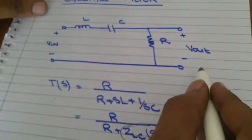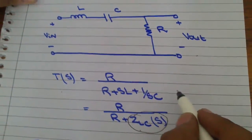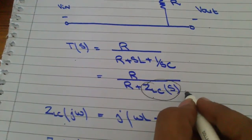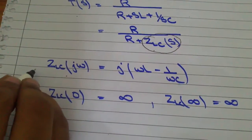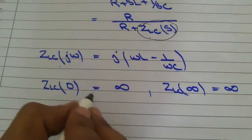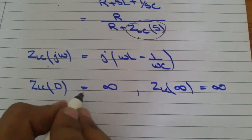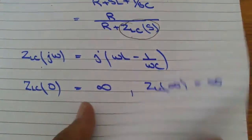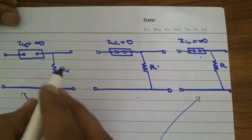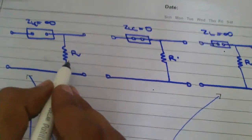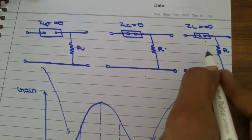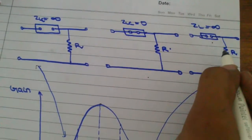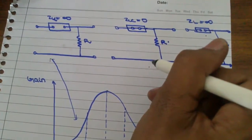We have the circuit of the RLC bandpass filter, and the transfer function of the circuit. Impedance plays the key role in finding the response. When the frequency is below the critical frequencies, the impedance is regarded as maximum, and when the frequency is higher than the critical frequencies, the impedance is again maximum. When the frequency is below the critical frequency, it acts as an open circuit; when higher, it also acts as an open circuit; but it acts as a short circuit when the frequency is at the critical frequency.